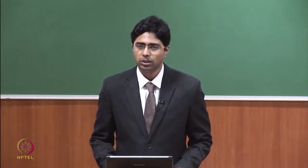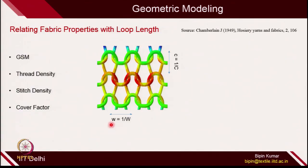For proposing the model, Chamberlain made certain assumptions. He first defined some parameters like course spacing and wales spacing, which we already know. W is the wales spacing — the distance between two wales. Capital W is the wales per inch. C is the distance between two courses, from head to head or feet to feet. Capital C is the courses per inch.